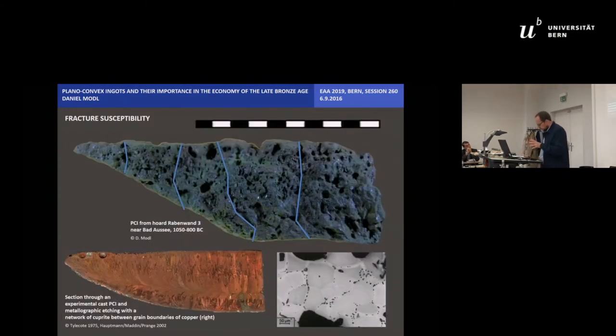Pure copper is very ductile and therefore hard to break under cold conditions. Most of the PCIs are broken in a red-hot state immediately after casting or after a later heating in a charcoal fire. Especially high porosity was beneficial for breaking the ingots into fragments because the fractures could spread along the pores and cavities through the copper matrix.